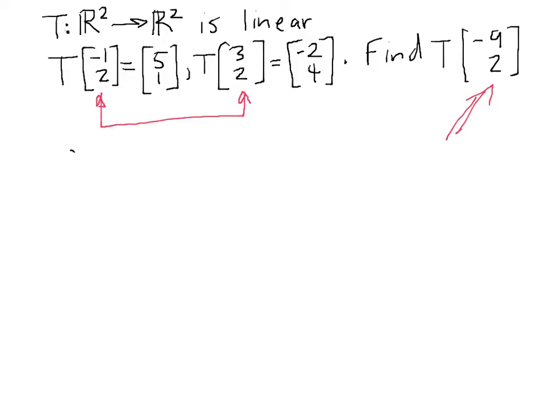What we want to do is take our vector [-9, 2] and write it as a linear combination of those other two vectors. So we have C₁ times [-1, 2] plus C₂ times [3, 2].